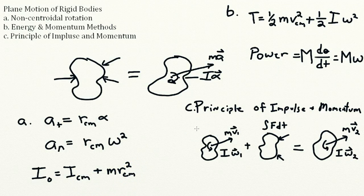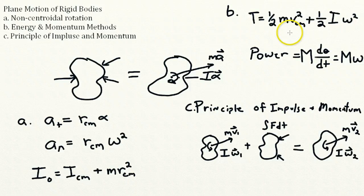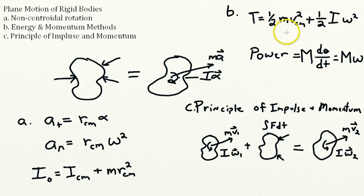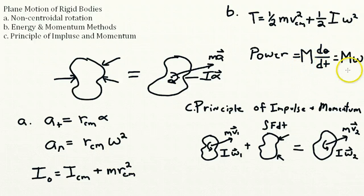For energy and momentum methods, the key addition is that kinetic energy must include both a translational term and a rotational term, and we can write the power using M, the magnitude of the couples. Finally, here is the principle of impulse and momentum applied to rigid body plane motion.